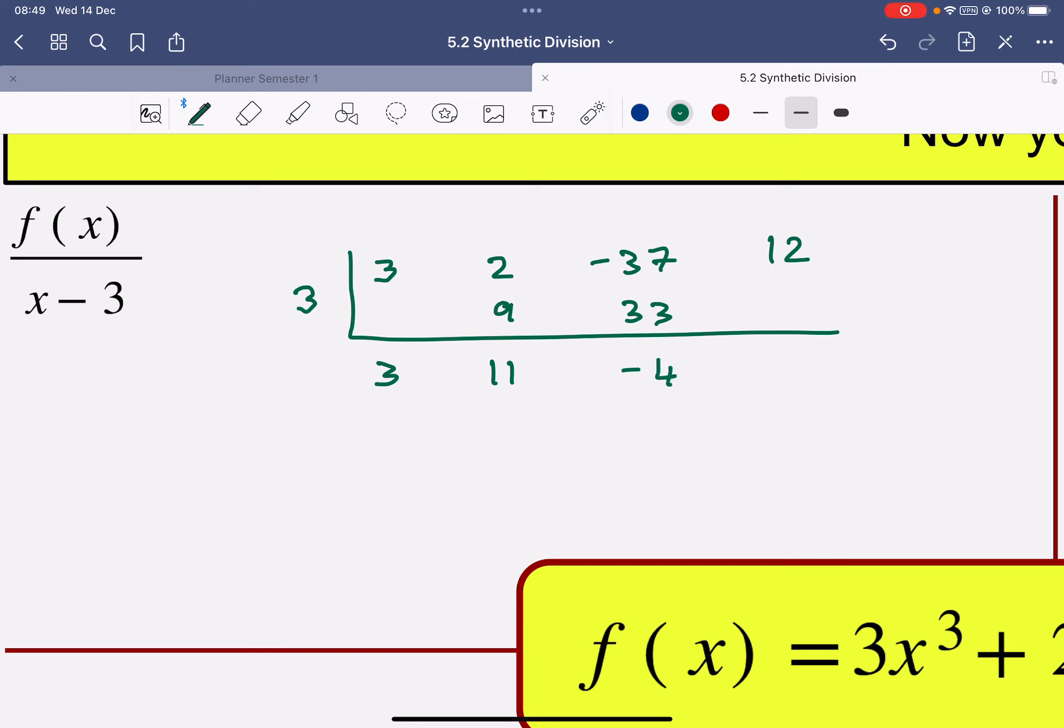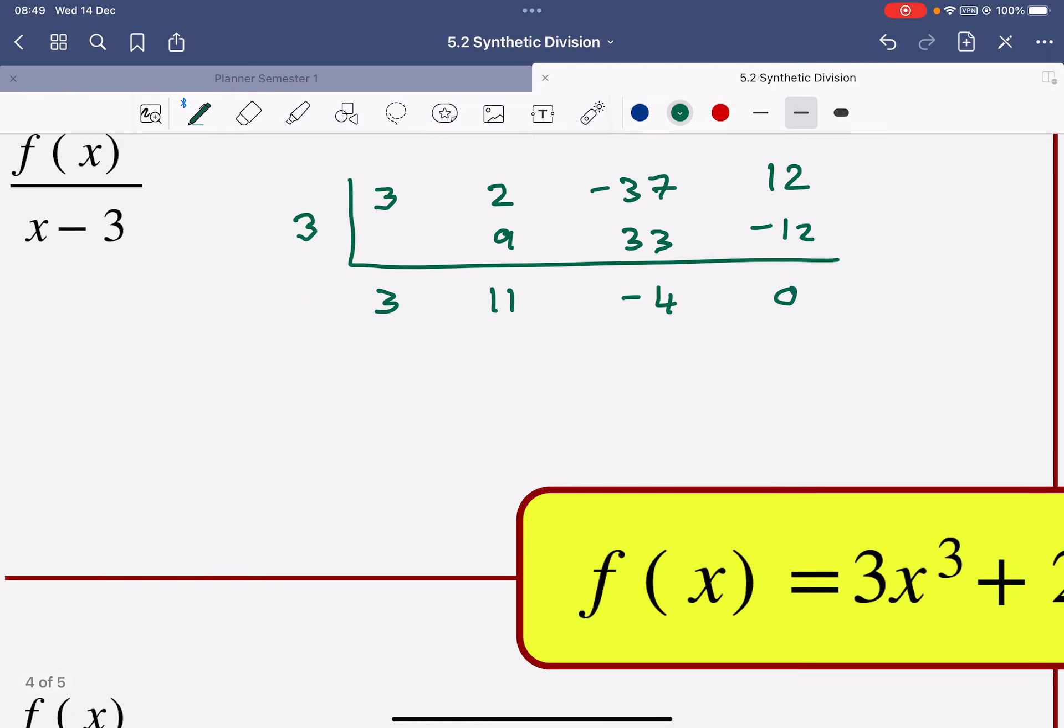And then 3 times negative 4 is negative 12. And we add those together to get 0. So that's the remainder. And we started off with a cubic, so my answer is 3x squared plus 11x minus 4. And that's my other factor.